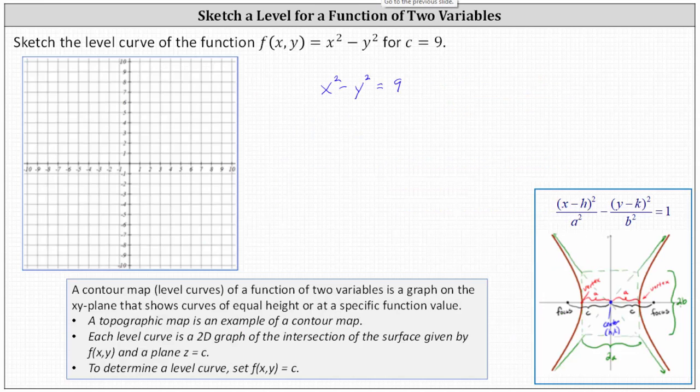But of course we want the right side to be equal to one so let's divide everything by nine. Simplifying we have x squared divided by nine minus y squared divided by nine equals one.